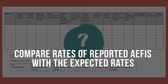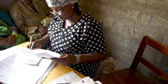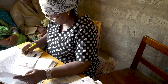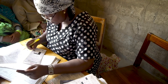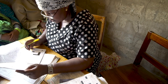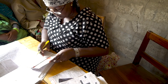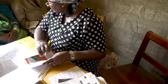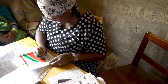You need to calculate the rates of the reported AEFIs and compare them with the expected rates for the month. If you do not, you may miss a critical problem within your immunization program, whether due to an error in vaccine handling or administration, the vaccine itself, or simply concern from the community.